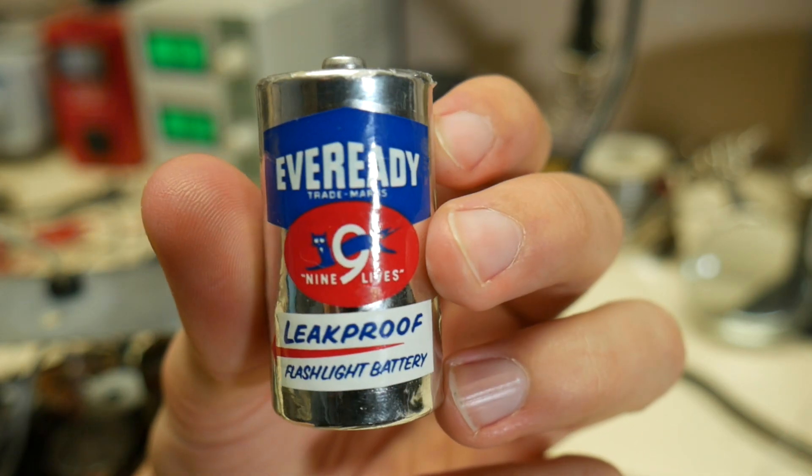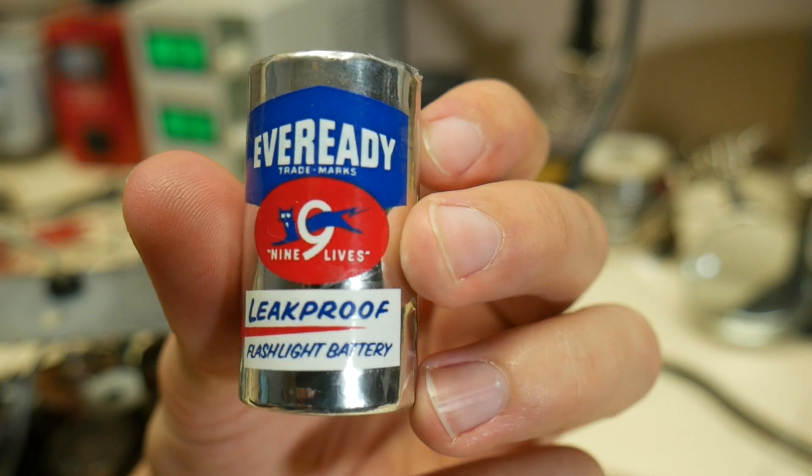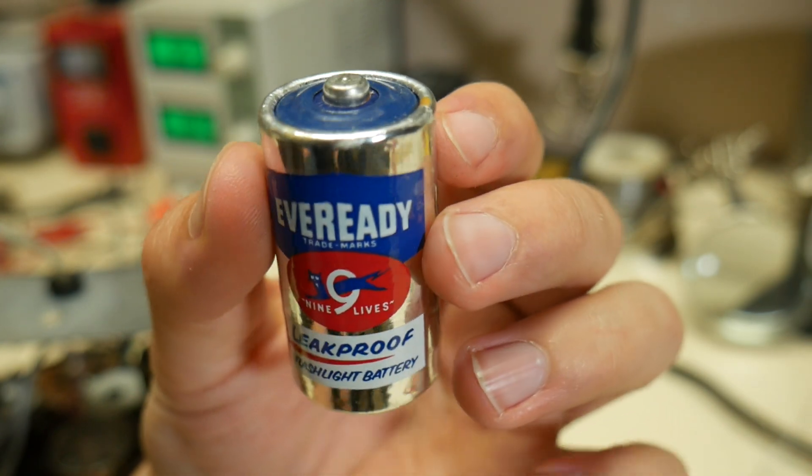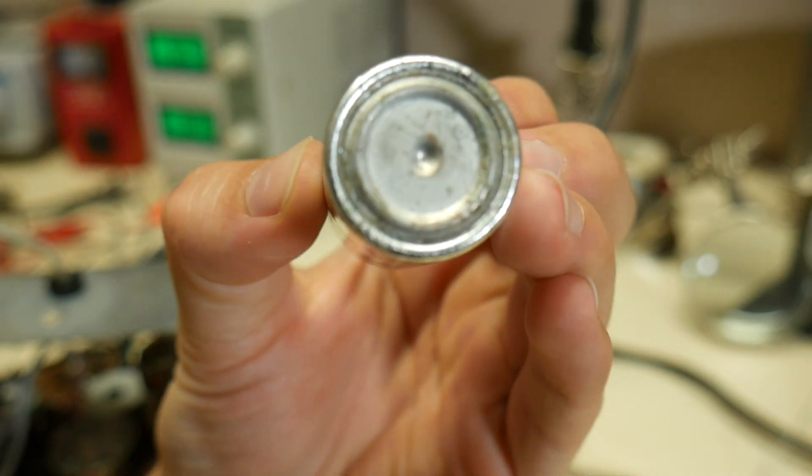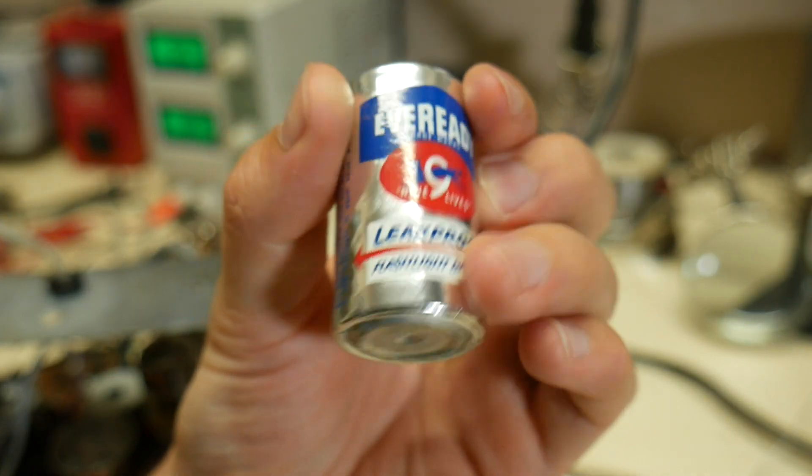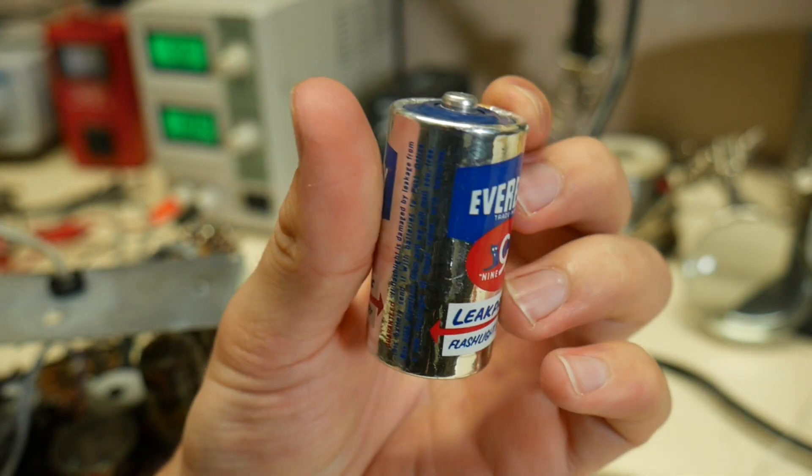Even though this battery still has 1.4 volts in it, it probably can't hold that voltage when you put any kind of load across it. And this battery is also corroding a little bit as well. So I'm going to replace this with a more modern C-cell battery.